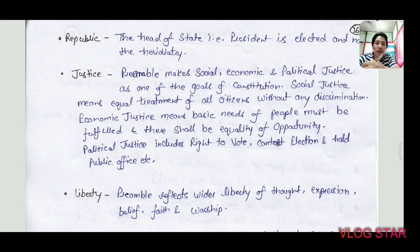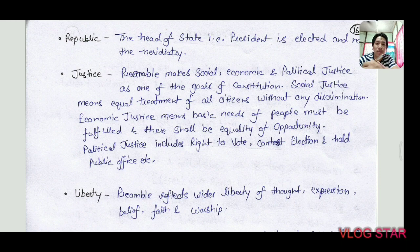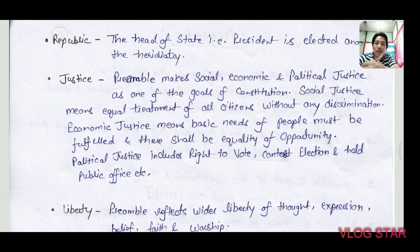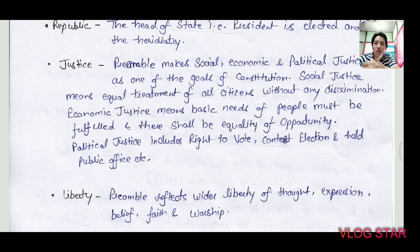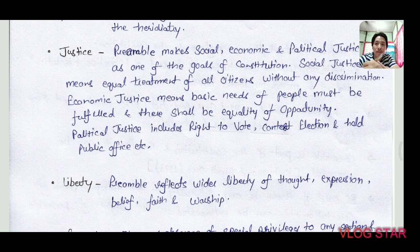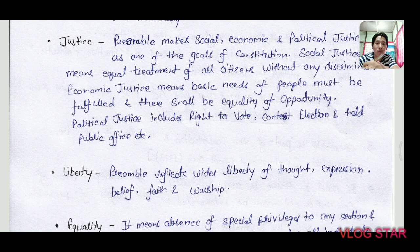The Preamble clarifies that it endeavors towards ensuring justice — social, economic, and political justice. Social justice means equal treatment of all citizens without any discrimination. Economic justice means the needs of the people must be fulfilled and there must be equality of opportunity. Political justice includes the right to vote, contest elections, and hold public office.